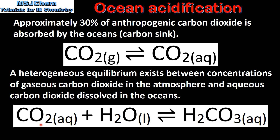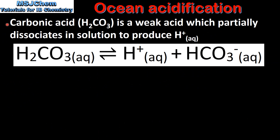The dissolved carbon dioxide reacts with water to form H₂CO₃, which is carbonic acid. Carbonic acid is a weak acid which partially dissociates in solution to produce aqueous hydrogen ions. This equation shows the dissociation of carbonic acid to form aqueous hydrogen ions and the hydrogen carbonate ion.